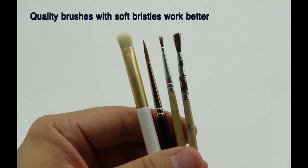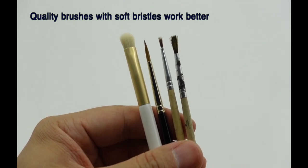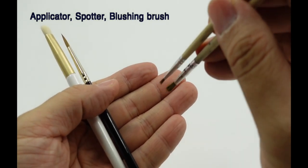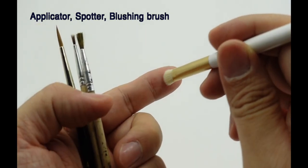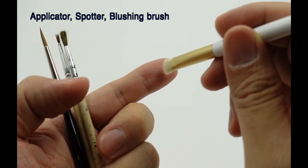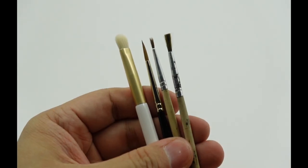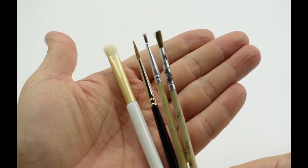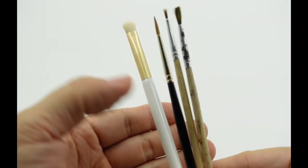There are basically three kinds of brushes that we use for this technique: the applicator, the sporter, and the blushing brush. You can estimate the size of these brushes with my hand as a reference.